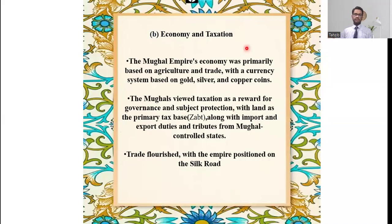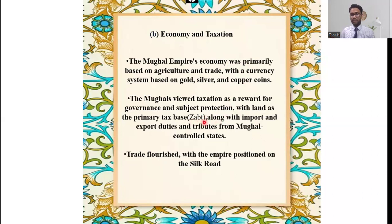The economy and taxation of the Mughal period was primarily based on agriculture and trade. Currency was based on gold, silver, and copper coins. There was a primary land tax as well as import and export duties. Trade flourished during this empire, which was positioned along the Silk Road.